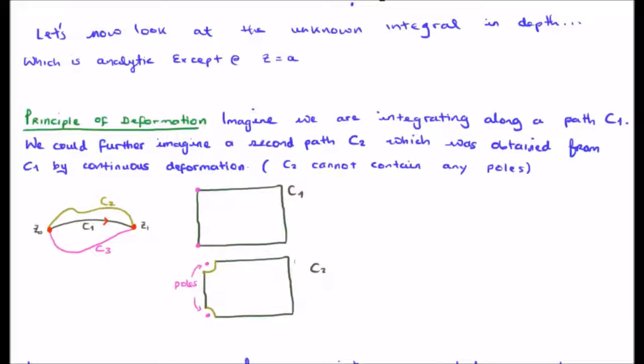So what we can do is deform our curve c1 around the poles. Generally, what we do is we deform around the poles in a circular form and we continue from there. Now, if it's very important to take into account the behavior of your function actually at the poles, we usually just take a limit as the radius of these particular circles extends to 0.